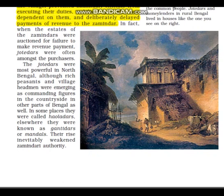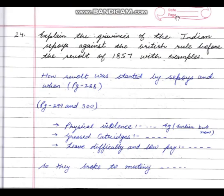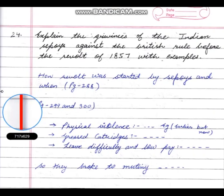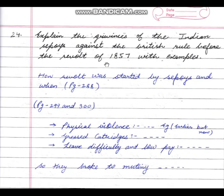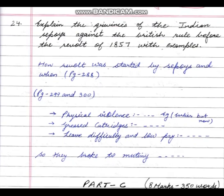Last question: 'Explain the grievances of the Indian sepoys against the British rule before the Revolt of 1857 with examples.' Since the question mentions sepoys and the Revolt of 1857, introduce in your answer how the revolt started and when. Then write a connecting line: 'The grievances of Indian sepoys against the British rule before 1857 were:'